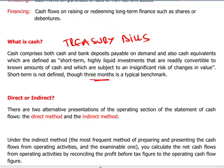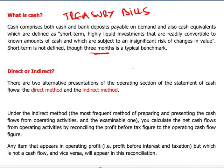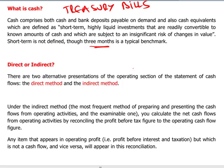There are two ways in which a statement of cash flow can be presented: either using the direct or the indirect method. The standard recommends the direct method, but probably the most widely used in practice is the indirect method. This one is more frequent and more examinable, and all you need to know for the indirect method is the pro forma.